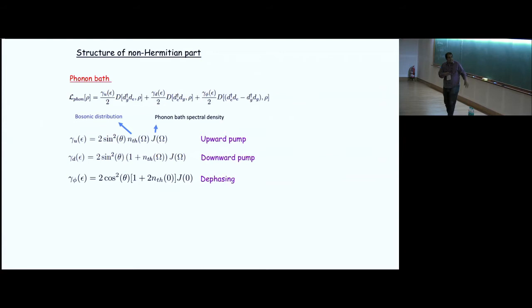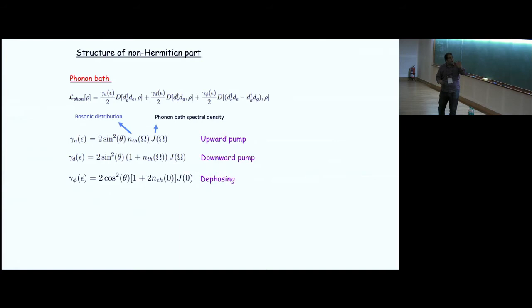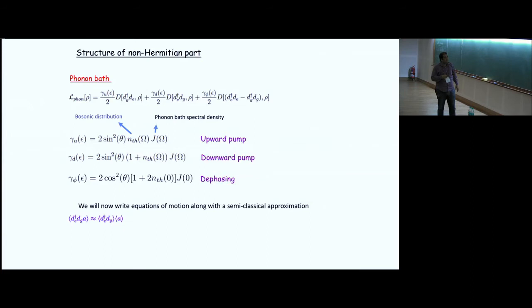The Hamiltonian separates into a unitary part — the double dot and cavity mode as my subsystem — and a non-Hermitian bath part. The rest is treated as a bath because it has large degrees of freedom. This is the system-plus-bath structure.